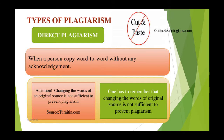The first classification is direct plagiarism, also known as cut and paste. We often take content from Wikipedia and paste it somewhere else. When a person copies word for word without any acknowledgement, that is cut and paste plagiarism. For example, the sentence 'attention — changing the words of an original source is not sufficient to prevent plagiarism' was taken from turnitin.com and modified as 'one has to remember that changing the word of original source is not sufficient to prevent plagiarism.' This patch is similar to the original — that is cut and paste plagiarism, which should be avoided as a first priority.